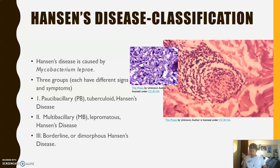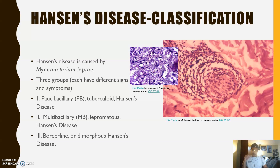The first one — paucibacillary tuberculoid Hansen's disease — is characterized by one or few hypopigmented or hyperpigmented skin macules. It exhibits loss of sensation due to infection of the peripheral nerves supplying the region. So this disease affects not only the skin but the nervous system as well, which can be very scary if left untreated.